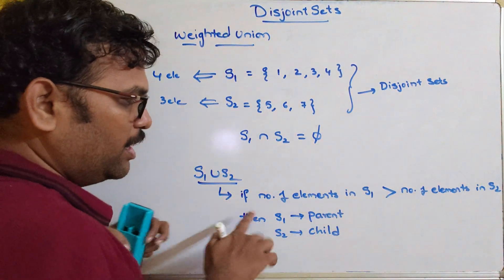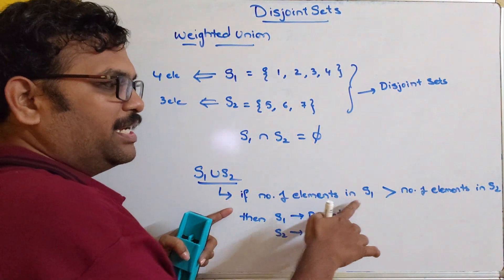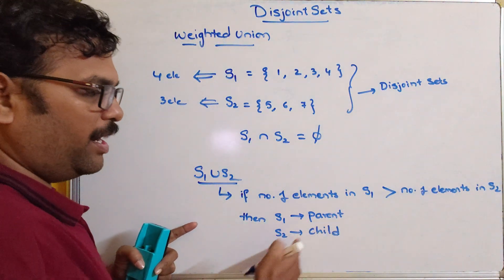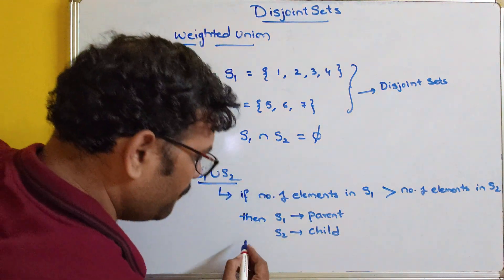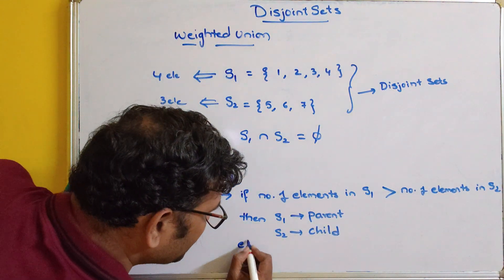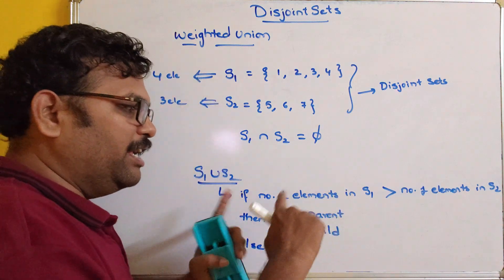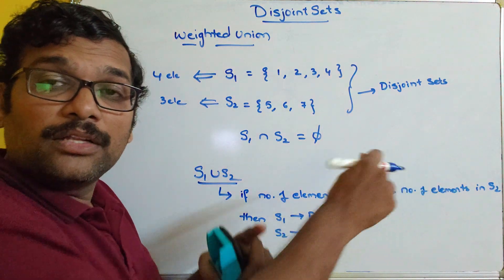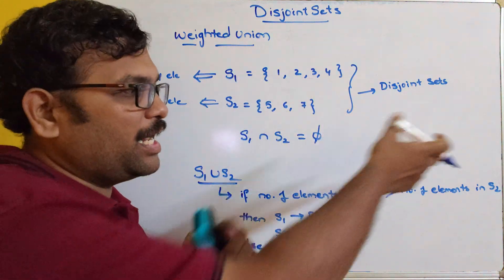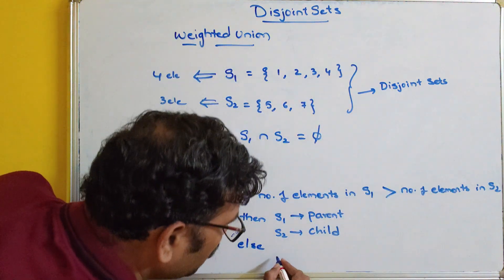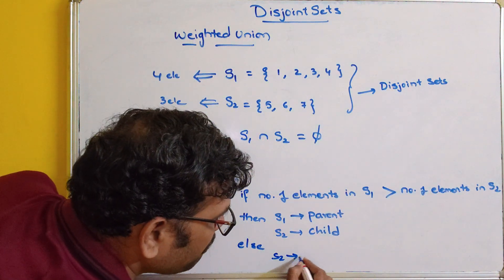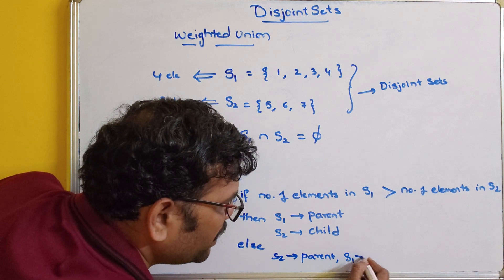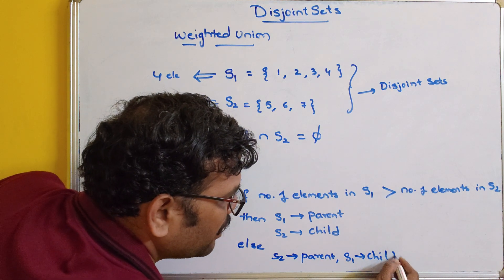Remember: if the number of elements in S1 is greater than S2, S1 will be the parent and S2 will be the child. Else, if the number of elements in S1 is less than S2, then more elements are in S2, so S2 will be the parent and S1 will be the child.